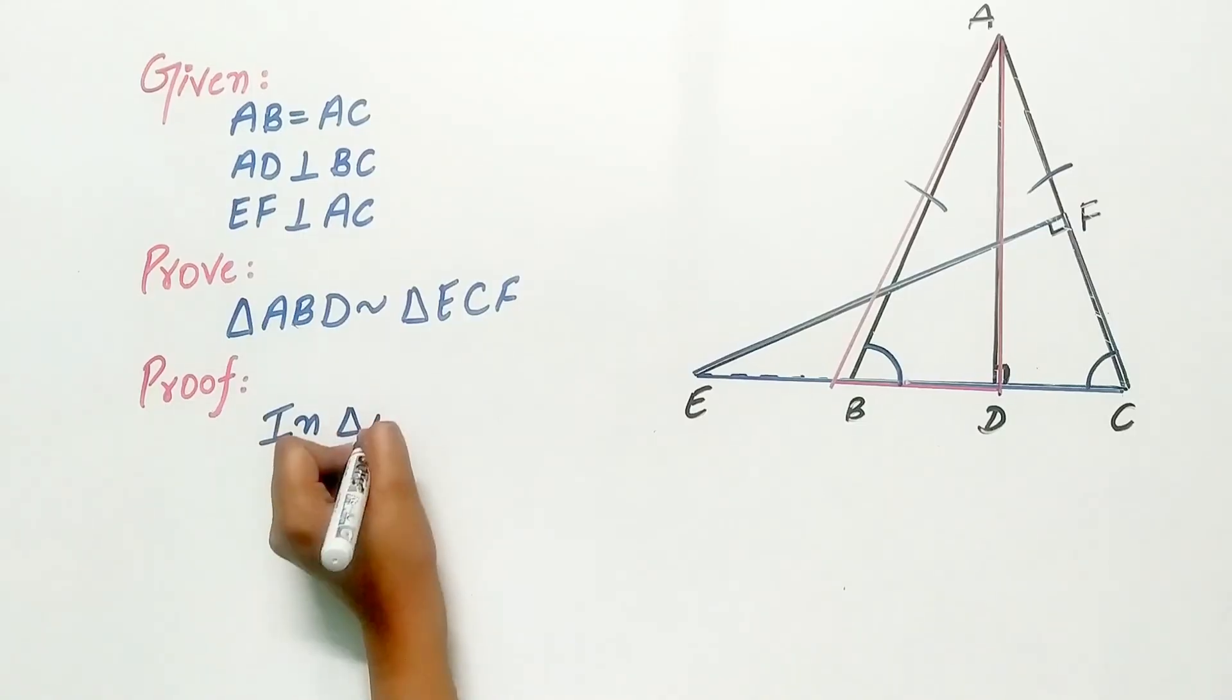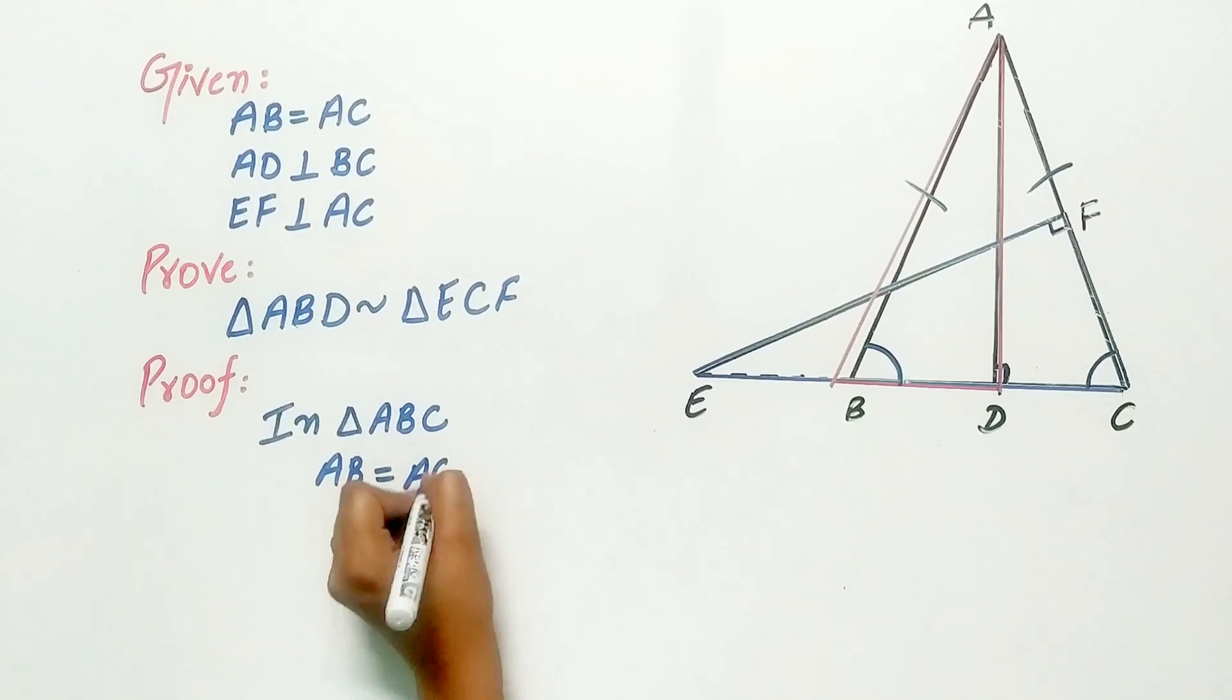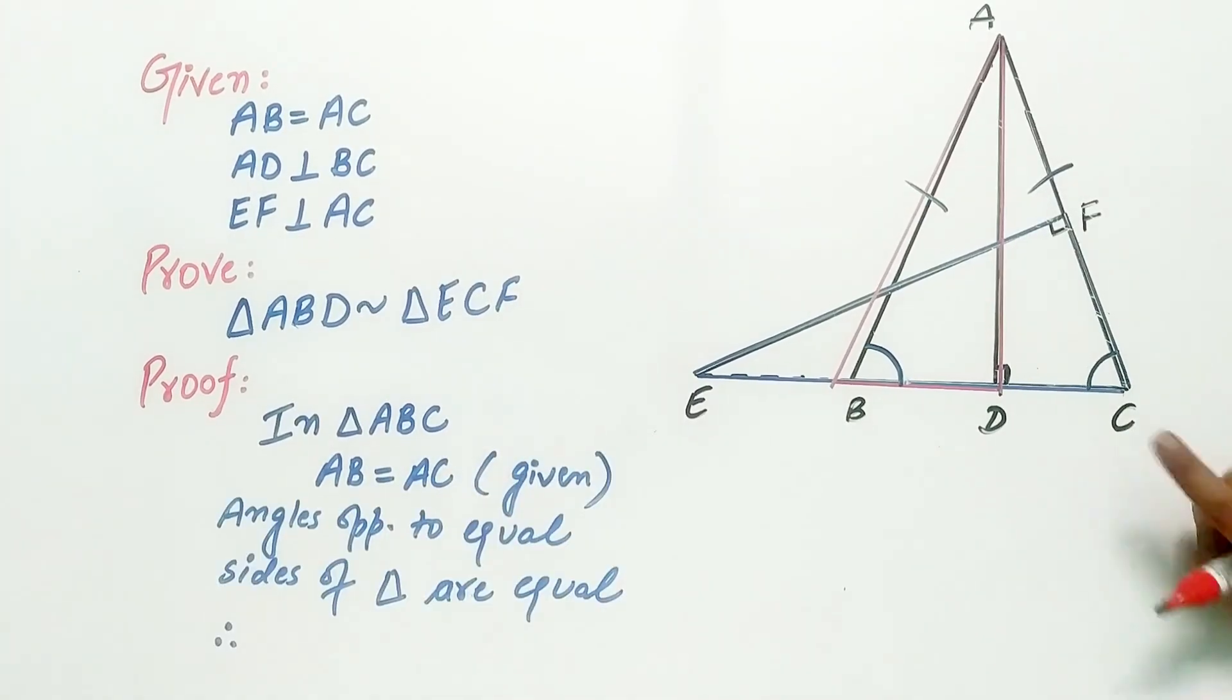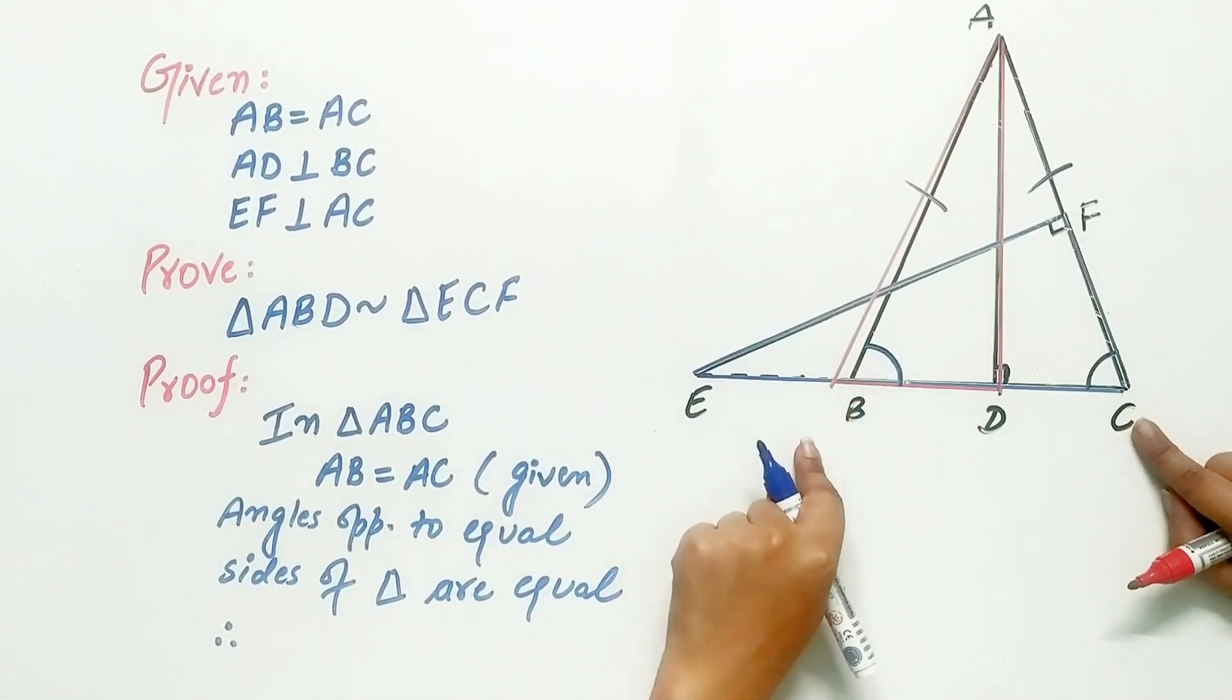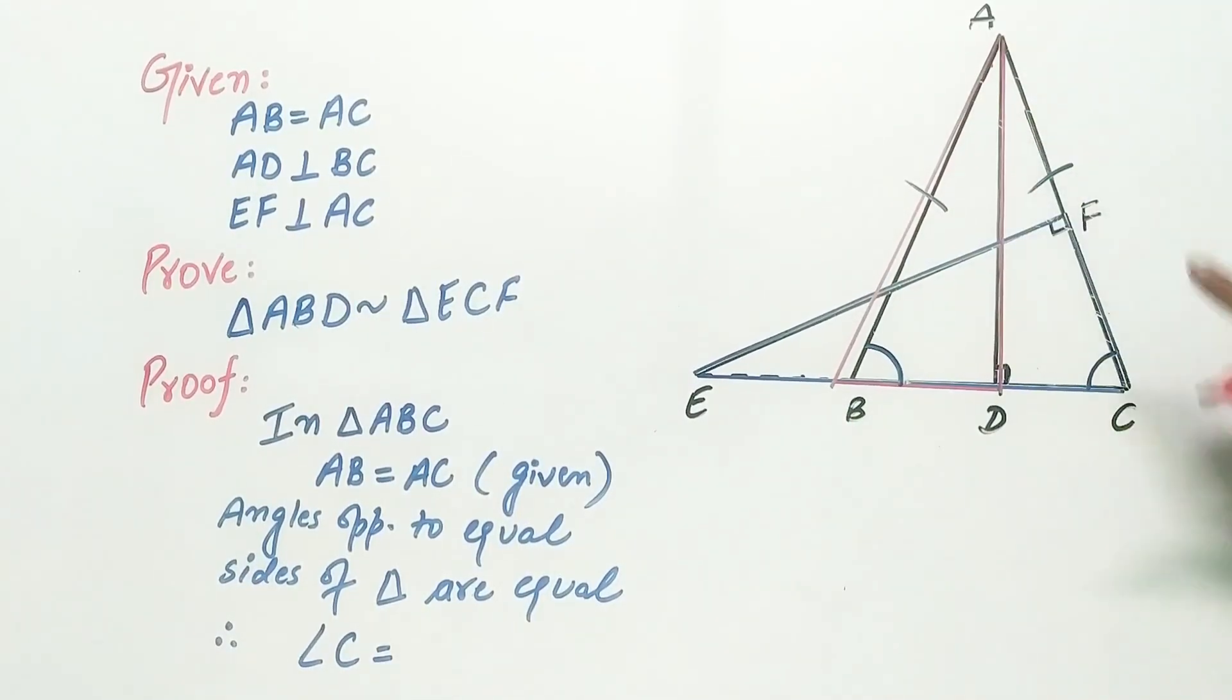In triangle ABC, AB is equal to AC given to us. Angle C, that is opposite to side AB, and angle B, which is opposite to AC, are equal.